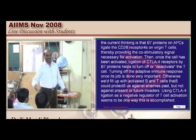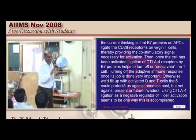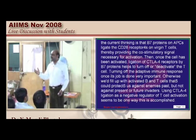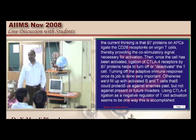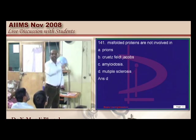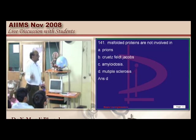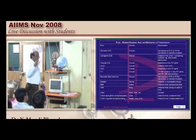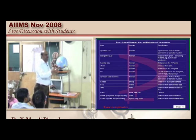It is the antigen-presenting mature dendritic cell that causes the naive T-cell to become co-stimulated. Prion-related disorders include sporadic CJD, familial fatal insomnia, scrapie, and amyloidosis. Prion itself is a wrongly folded protein.